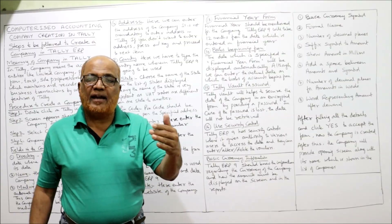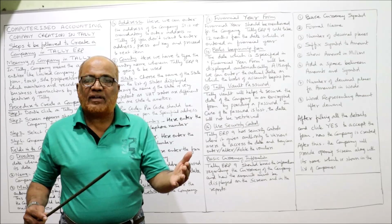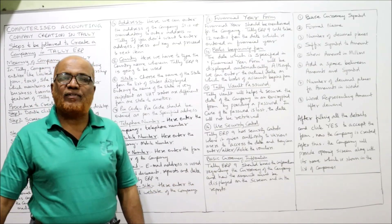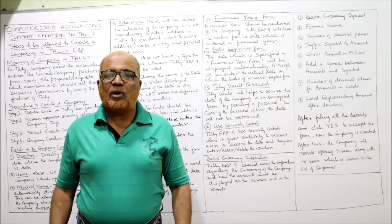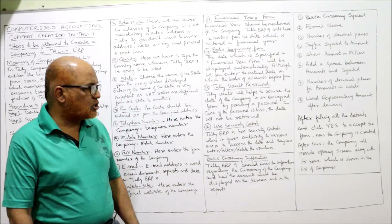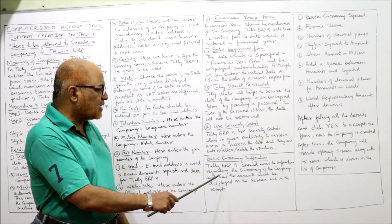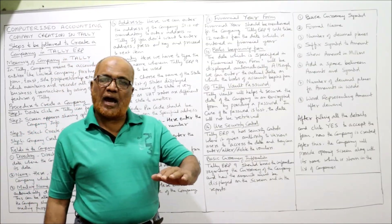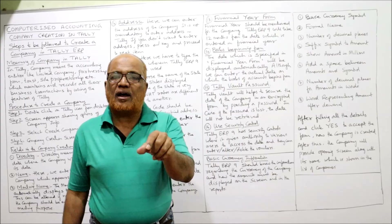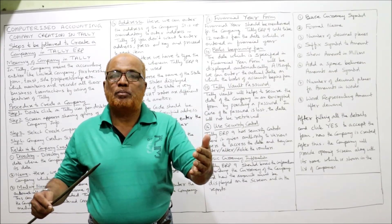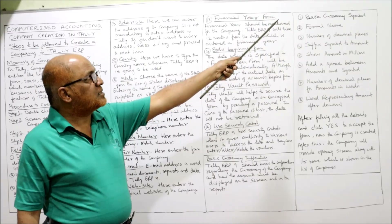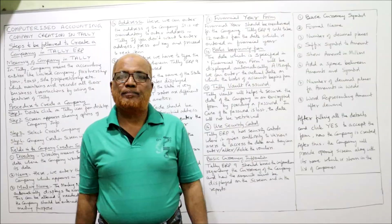These 16 fields must all be filled in before the company can be created. Apart from these, basic currency information must also be provided to Tally ERP 9, since currency differs by country. Tally needs to know what currency is being used, how amounts should be displayed on screen, and how they should appear in reports.